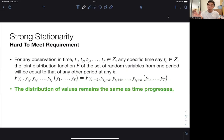So let's start with strong stationarity. Now we define strong stationarity as for any observation in time, say t1 until tn, an element of Z, for any specific time say tk an element of Z, the joint distribution function F of the set of random variables from one period will be equal to that of any other period. Now this is quite a mouthful, right? It's kind of hard to understand.